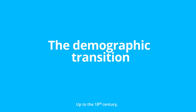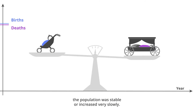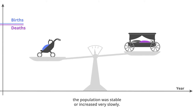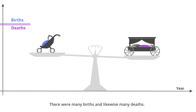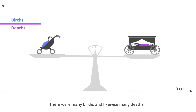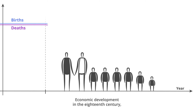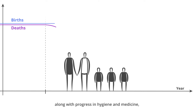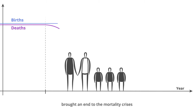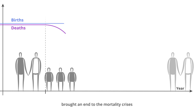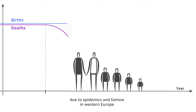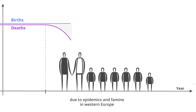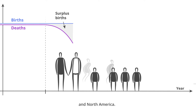Up to the 18th century, the population was stable or increased very slowly. There were many births and likewise many deaths. Economic development in the 18th century, along with progress in hygiene and medicine, brought an end to the mortality crises due to epidemics and famine in Western Europe and North America.